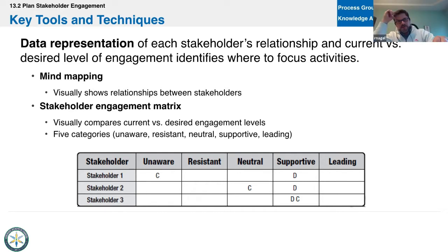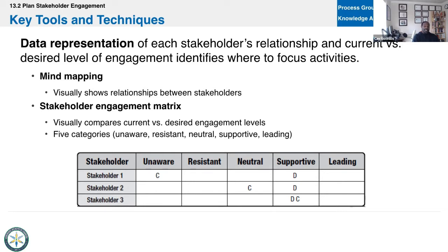The C's and D's are current versus desired — that's what that refers to. It's almost like if you have someone who's unaware, it's easier to get them to become supportive than if you have someone who's resistant, and even more so than someone who's neutral because they kind of know both sides and are just indifferent. We'll use matrices like these not only to see what the strategy is, but where we should be putting a lot of our resources and efforts. Sometimes it's not worth the effort — we may have a strategy and then determine it's not worth it.